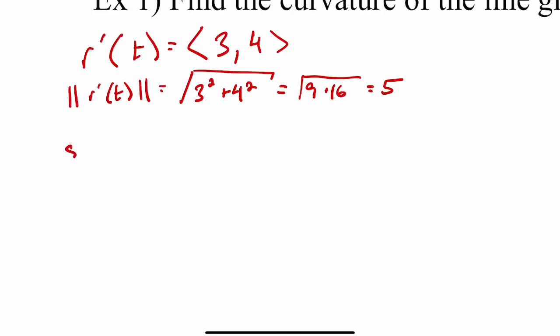So now we want to find s(t), which is going to be the integral from A, which we're using 0, all the way up to t of the magnitude of r'(t), which is 5 dt.